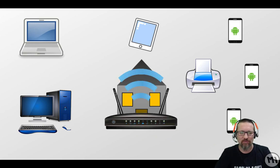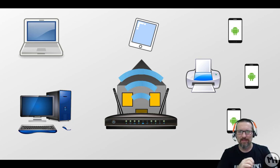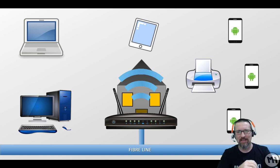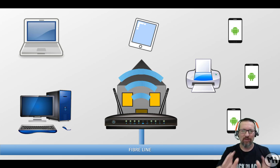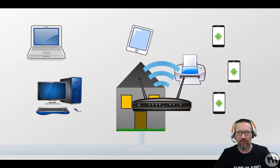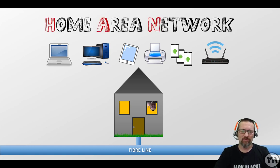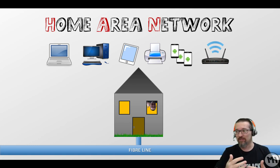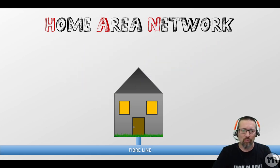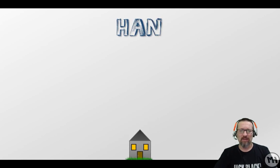The last thing I have, which is probably quite important, is a router. The router is then connected to a fiber line just outside of the house. So all of these things create what's called a network — and this kind of network is called a Home Area Network, or HAN.